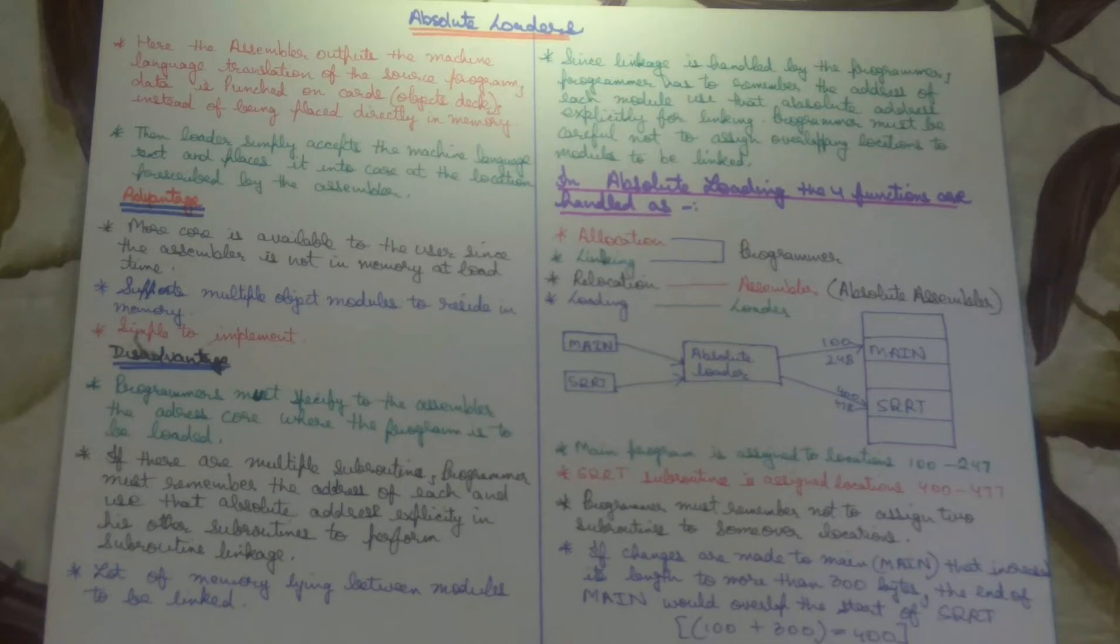The programmer must be careful not to assign overlapping locations to the modules to be linked. Sometimes it can happen that the programmer has two modules, module A and module B. A's address is 500, B's address is 600, and A needs to call B. But what did the programmer do? A's address is 500, and inside 500 they should have written 600, but instead of 600 they wrote 500 again. They assigned overlapping addresses and called their own module instead of calling the second module.